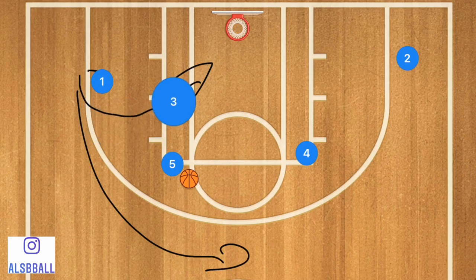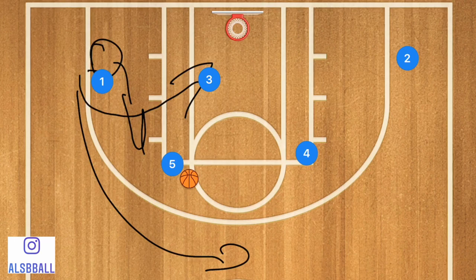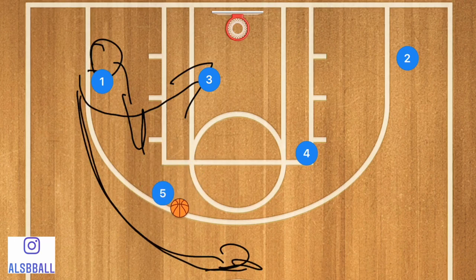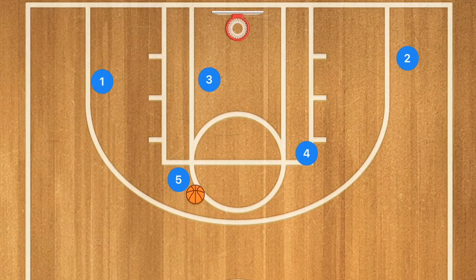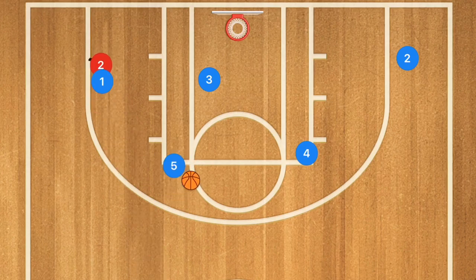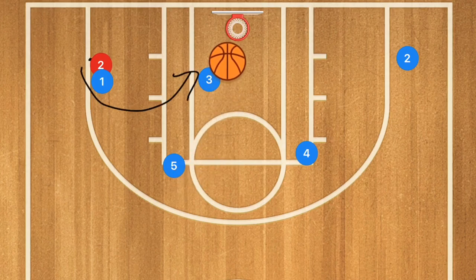This is about reading the defense. If Player 3 knows the defense is going to cheat, he might just pop up to the top — and this will be a dribble handoff. But if this is the first time we're running it and that defender gets pinned on Player 1, Player 3 is going to cut towards the rim and could be open for the layup.